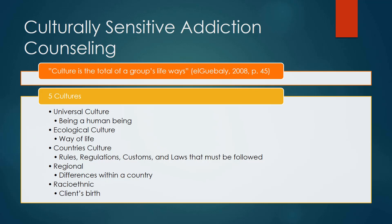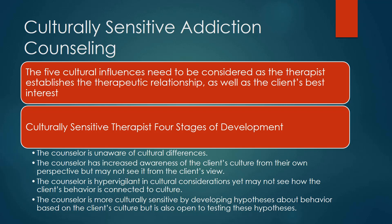And regional cultures, which is the differences within the country. Finally, ratio-ethnic, which includes the birth of your client or even yourself. These five cultural influences need to be considered as the therapist establishes the therapeutic relationship as well as the client's best interest.